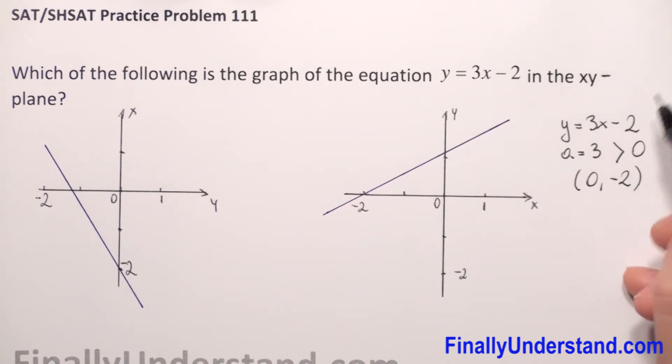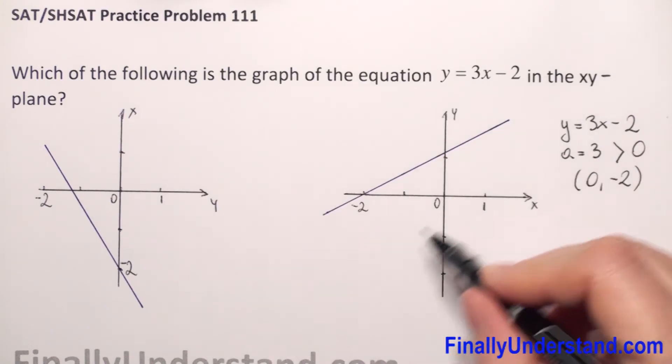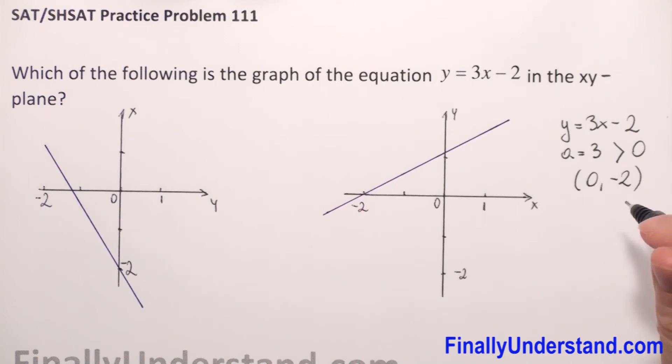One more time. Because the coefficient before x is positive, it means that our function is going up. So the first thing we have from this equation. And the second is the point in which our function intercepts the y-axis, 0, negative 2.